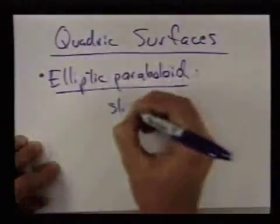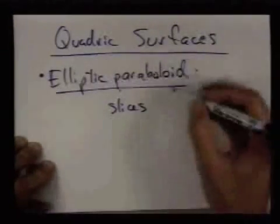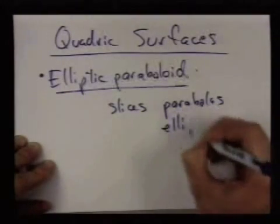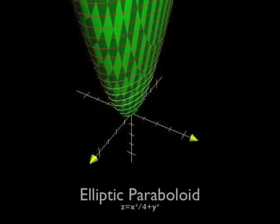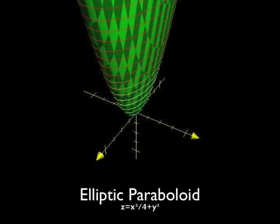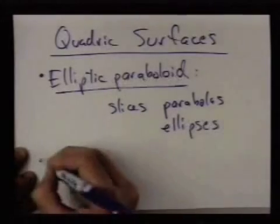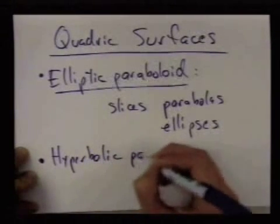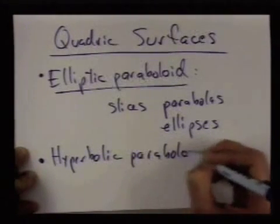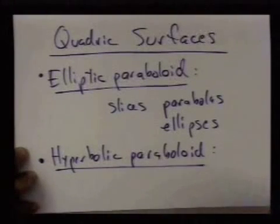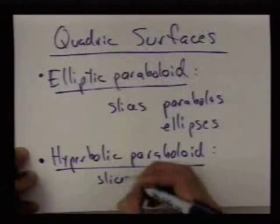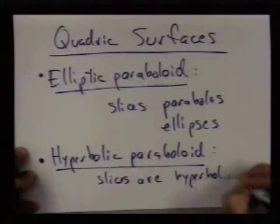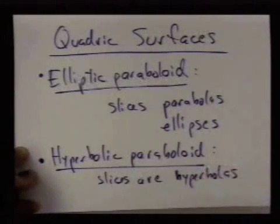And the slices of this — maybe you can guess — will be parabolas and ellipses. And finally, we have the hyperbolic paraboloid. And the slices of this will be hyperbolas and parabolas.